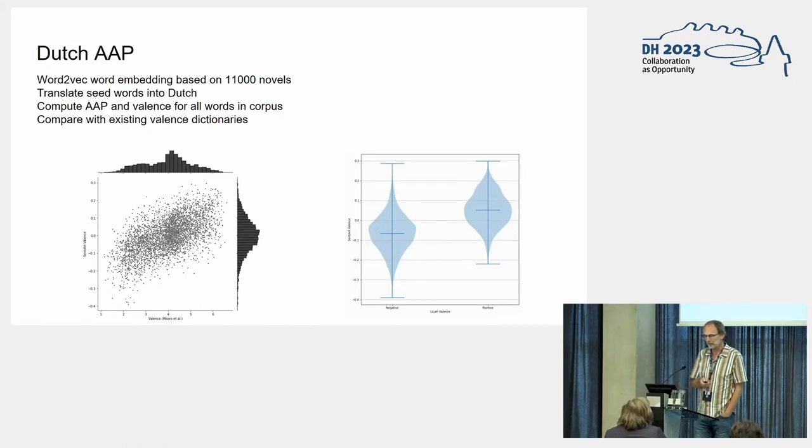We computed a word embedding based on 11,000 of our novels. We translated Jacobs' seed words into Dutch, and we computed the AAP—that's much easier than saying affective aesthetic potential. We computed the AAP and valence for all words in the corpus, and first we compared them with existing valence dictionaries for Dutch. Here you see the valence dictionary of Morse et al compared with our computed valence. And you see there's a 70% correlation. It's reasonably well. Another existing valence dictionary for Dutch which only has a binary classification into positive and negative words—here you see violin plots for the Senti-Art values, and you also see there's a clear difference, though not a super clear difference, between the positive and negative subcorpora within this Lila dictionary.